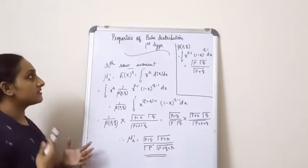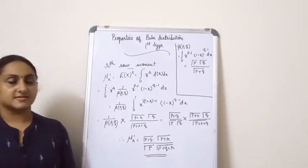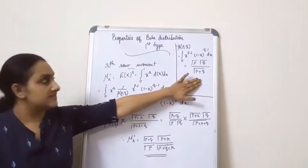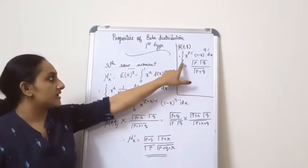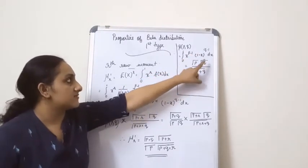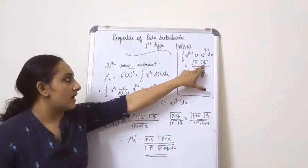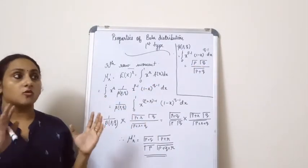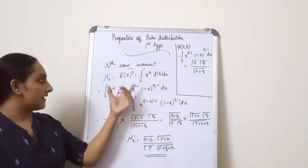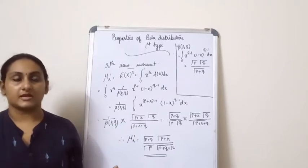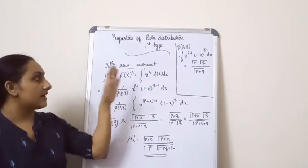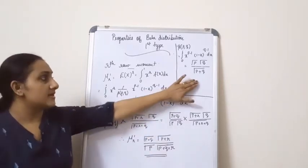Now let's look at the properties of the Beta distribution of the first kind. Before moving on to the properties, I want to show this result: Beta(p,q) is equal to the integral from 0 to 1 of x^(p-1) * (1-x)^(q-1) dx, which equals Gamma(p) * Gamma(q) / Gamma(p+q). This result helps a lot in finding the r-th raw moment, mean, and variance for further calculations regarding the Beta distribution of the first kind.